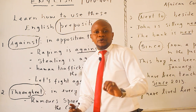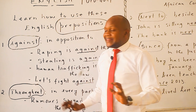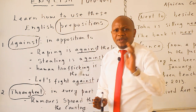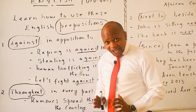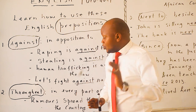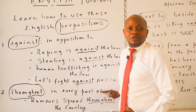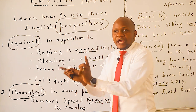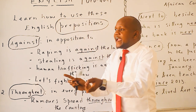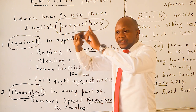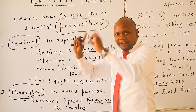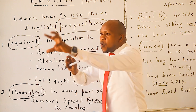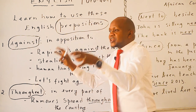Here we have what we call 'throughout.' This is another preposition. 'Throughout' means in every part of — every part of the place, the country, the room, the village. Every part of somewhere — that is what we call 'throughout.'